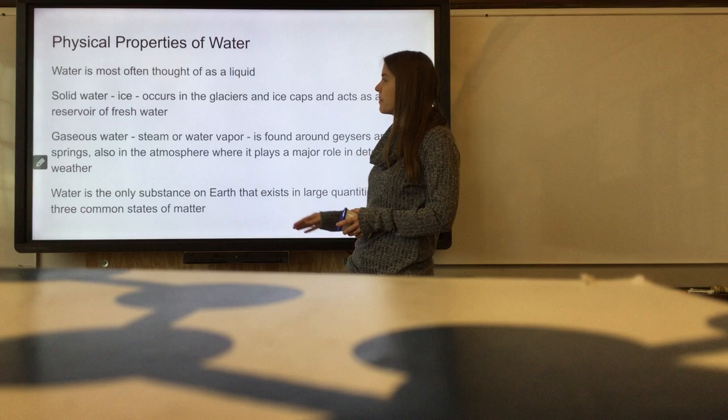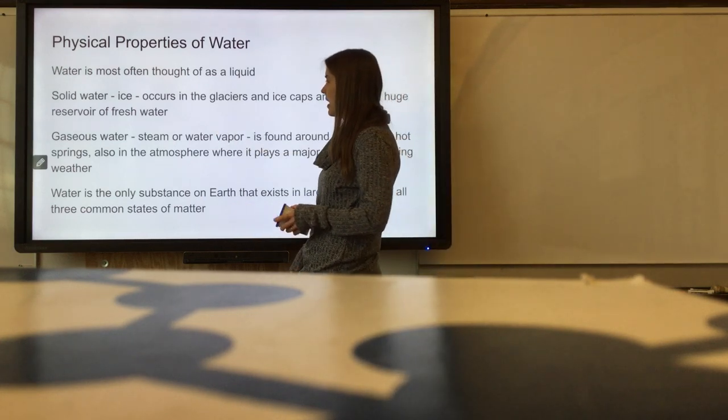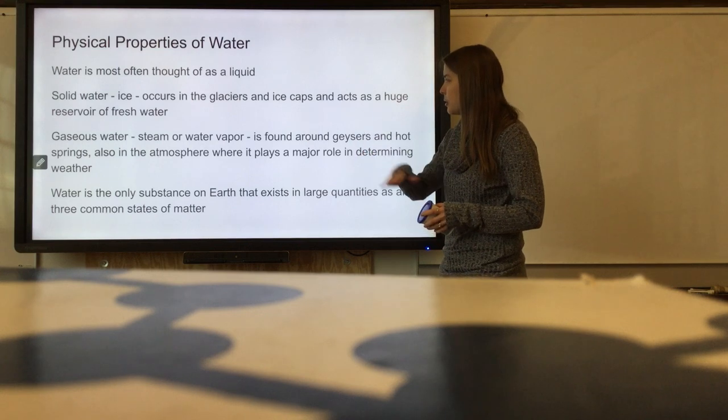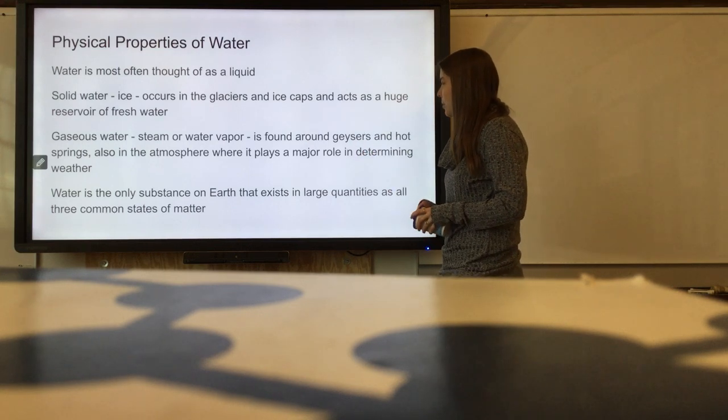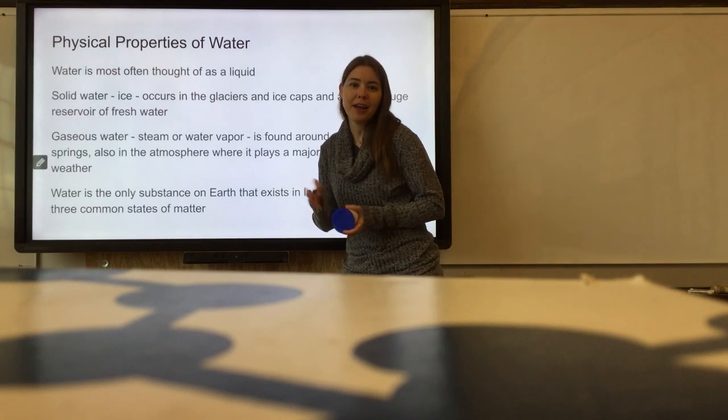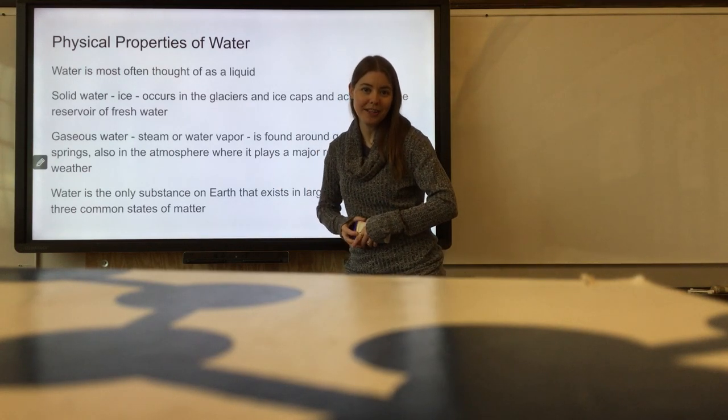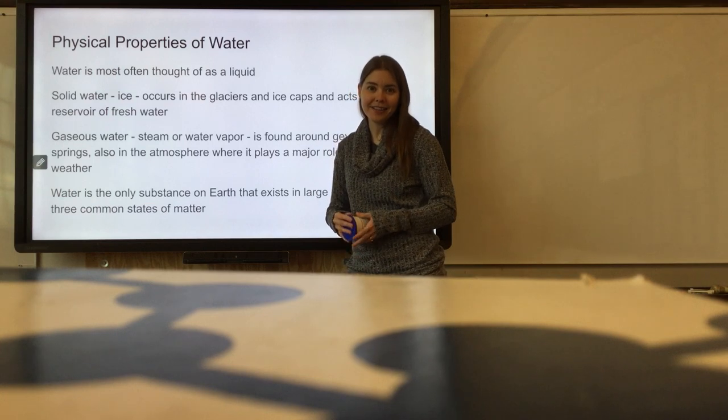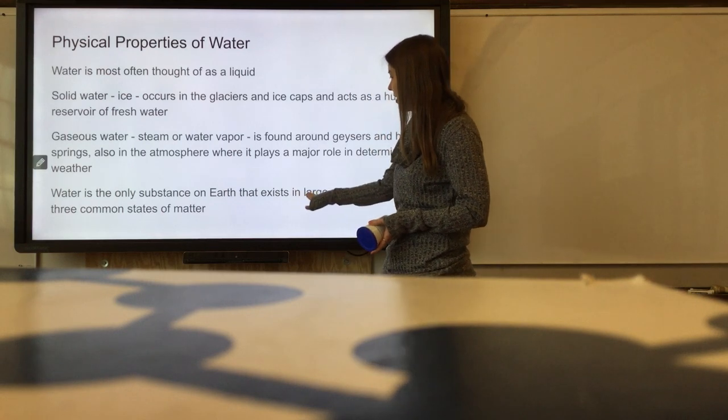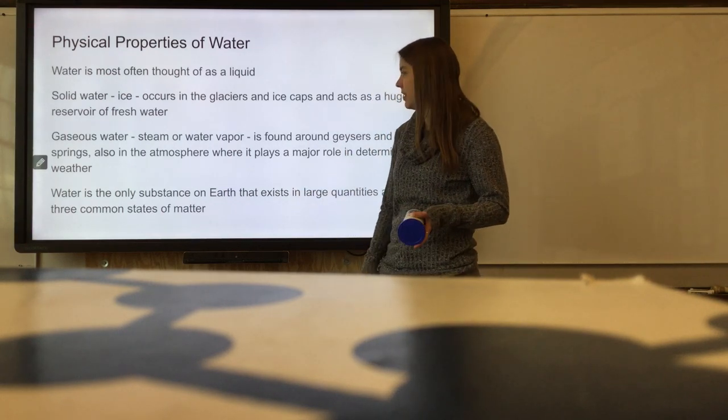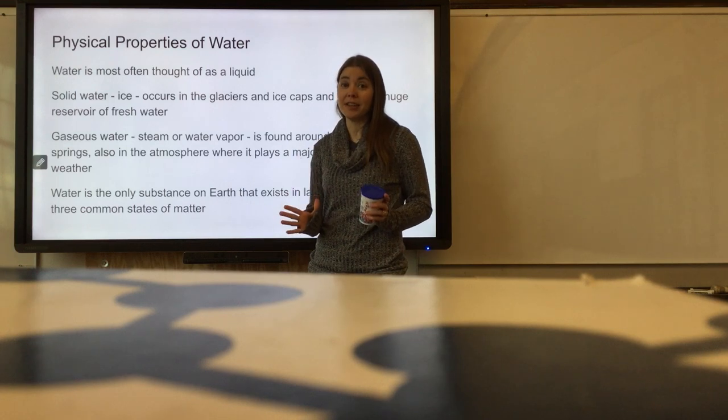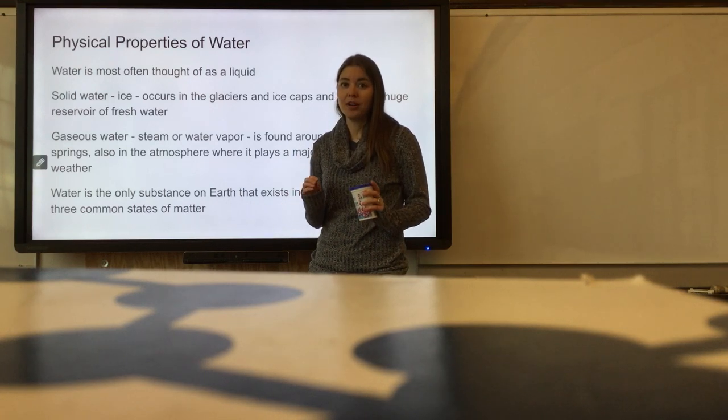Gaseous water, steam or water vapor, is found around geysers, hot springs, and in the atmosphere where it plays a role in determining weather. If we didn't have water vapor in the atmosphere, we would have no precipitation, no rain, which would be extremely bad. Water is the only thing on earth that exists in large quantities in all three common states of matter, which is part of why water is so cool.